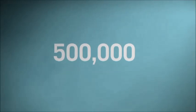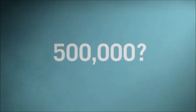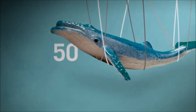So exactly how much is 500,000 tons? Well, a humpback whale, one of the world's largest animals, weighs about 50 tons, which means you'd need about 10,000 of them to balance the scales.